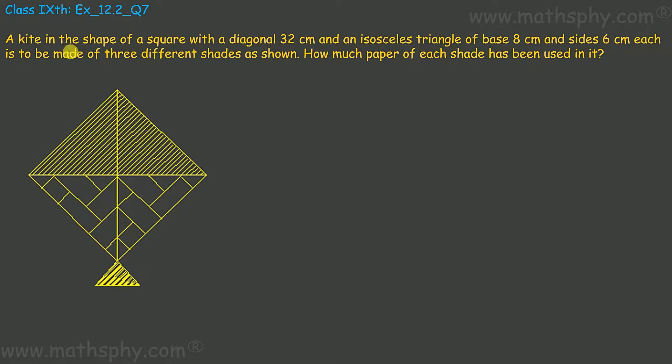This one here it says, a kite is in the shape of a square with diagonal 32 cm and an isosceles triangle of base 8 and 6 cm. Each is to be made of 3 different colors as shown. How much paper of each shade has been used in it?